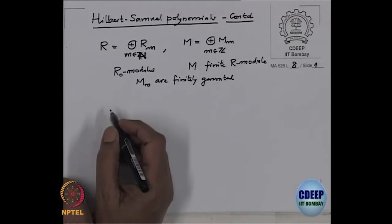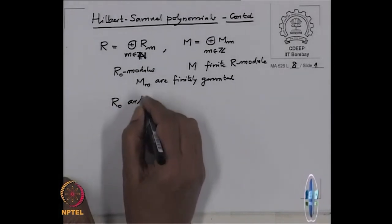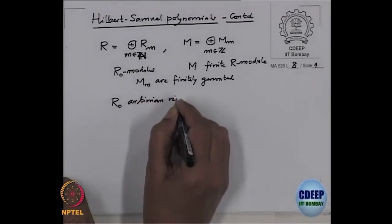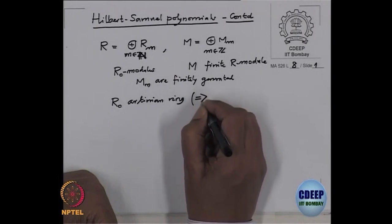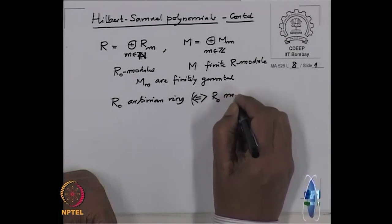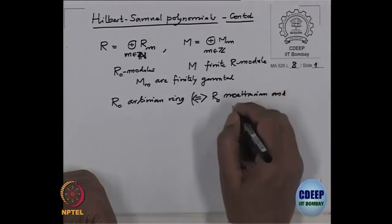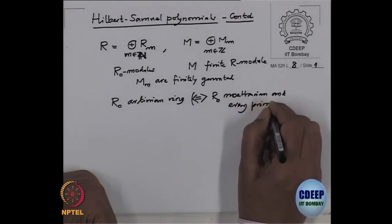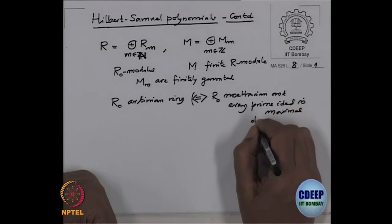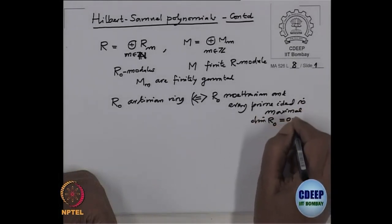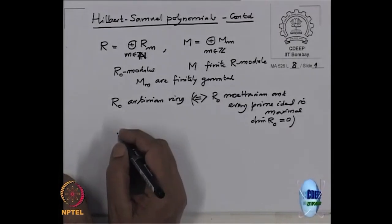We also assume that R0 is an Artinian ring. The simplest way to think about this is that it is equivalent to saying R0 is Noetherian and every prime ideal is maximal. This simply means the Krull dimension of R0 is 0. So in this situation we consider the following function.